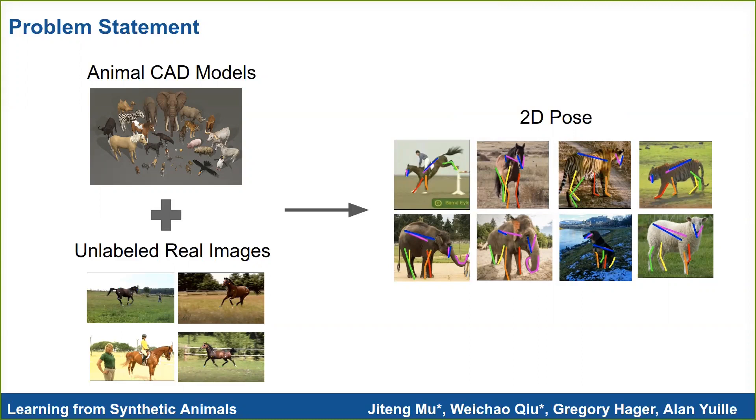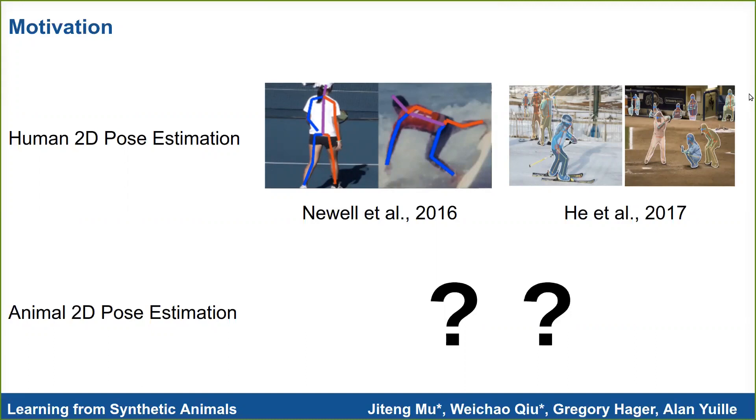Despite great success in human 2D pose estimation, progress for parsing animals is still limited by the lack of large-scale datasets.